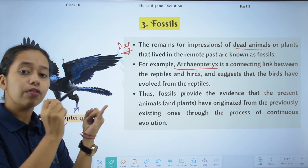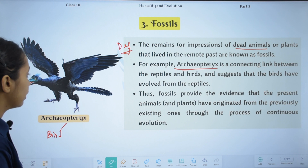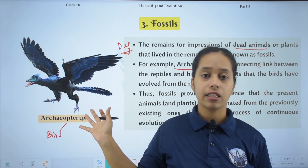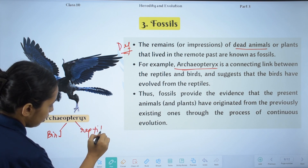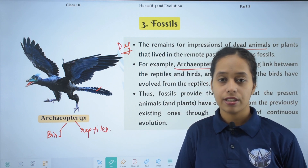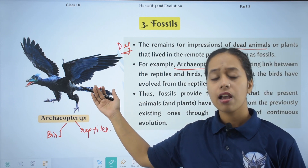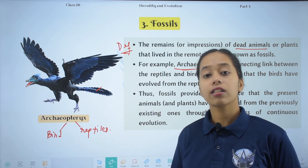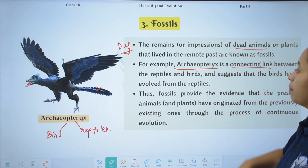Archaeopteryx has features of a bird — it has feathers and wings. But it also has features similar to reptiles, such as teeth and a tail. Looking at it, it appears like a bird because of its feathered wings, but then there are features that match with those of reptiles. So the conclusion is that it is a connecting link between reptiles and birds.